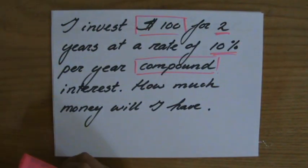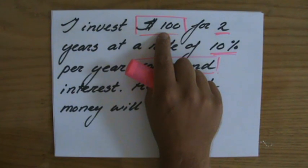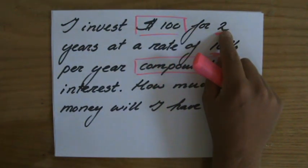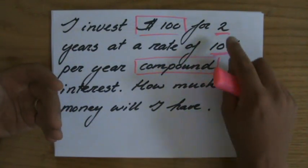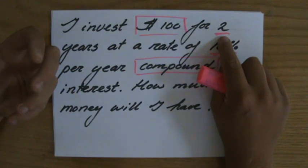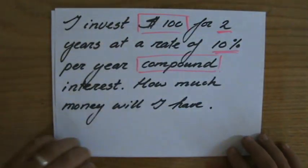Now, for simple interest, what would I have done? I would have found 10% of $100, which is $10 and I would have multiplied that by two in this case. So for simple interest, I would have gotten $20 interest, and then the question is how much money will I have, $100 plus $20, so $120.